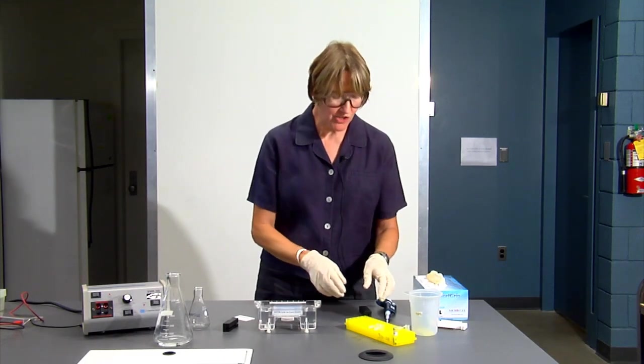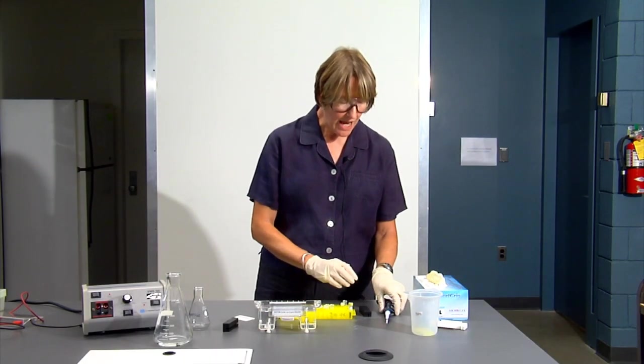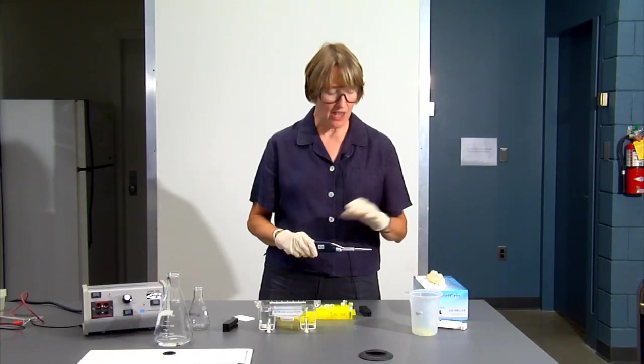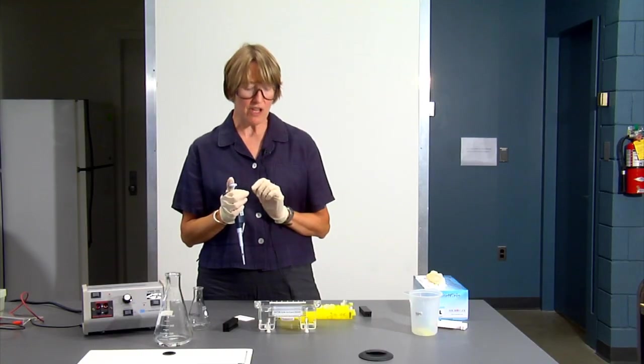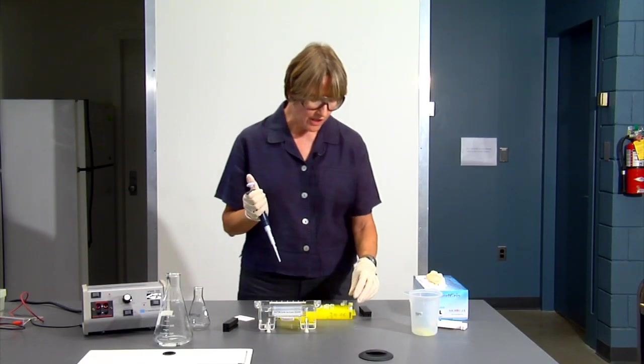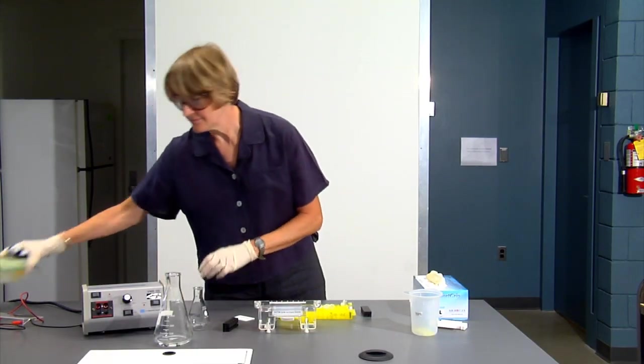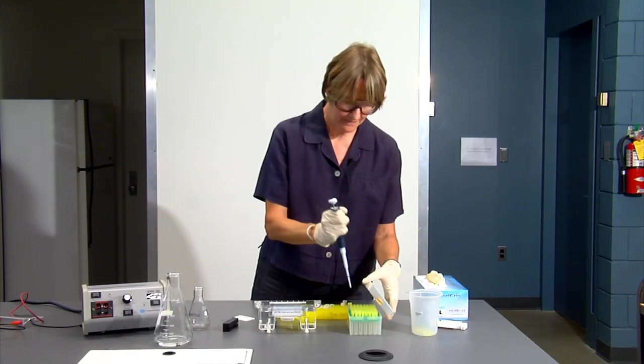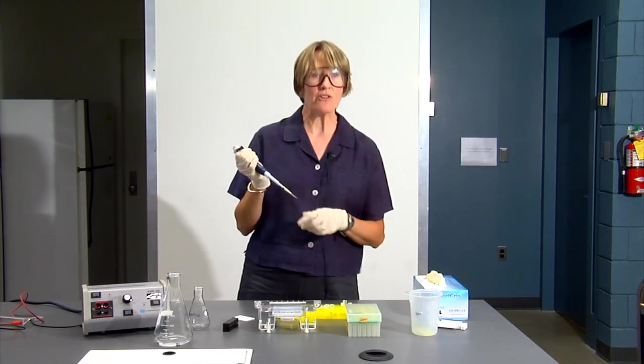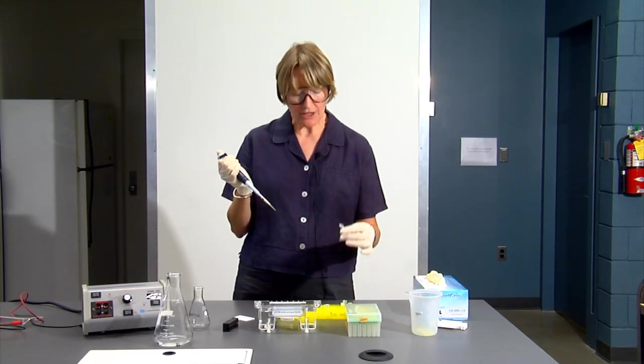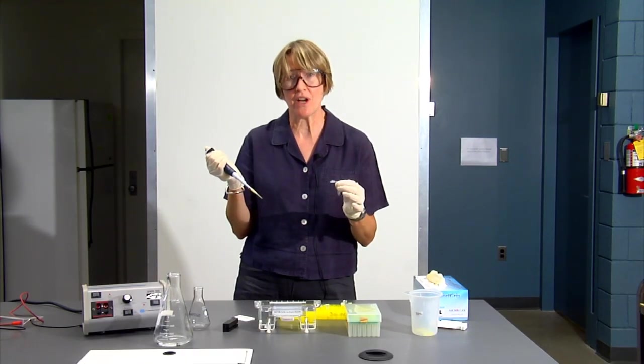While the gel was hardening, you prepared your samples. You have a standard and a set of samples. I am only going to add two samples to the gel as a demonstration, but you each have two samples and there are three of you, so you will have six samples plus your DNA ladder standard. Each of your samples should be about 10 microliters. If you don't have 10 microliters, just use whatever you have left.